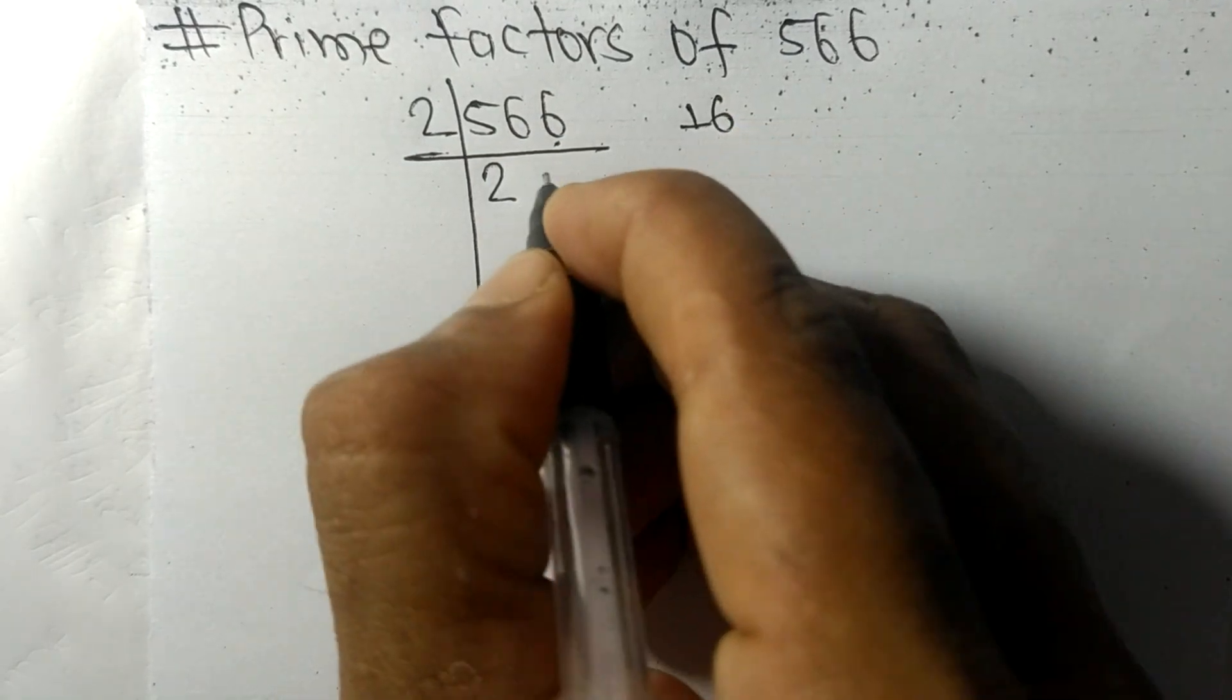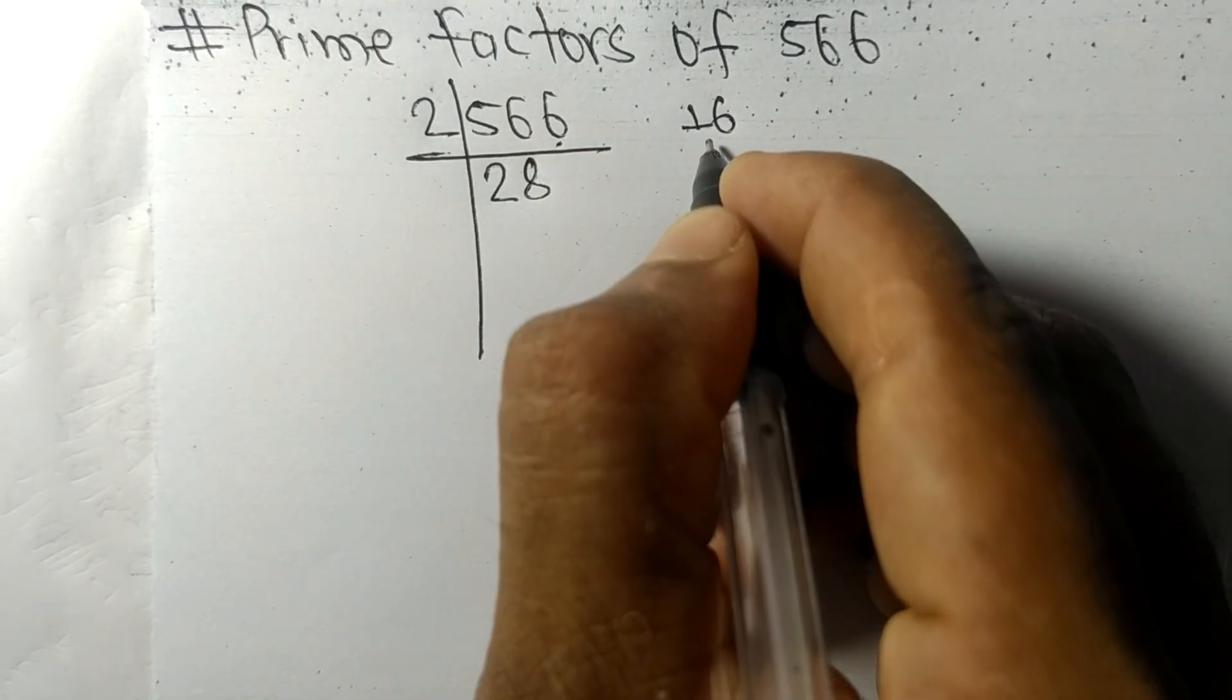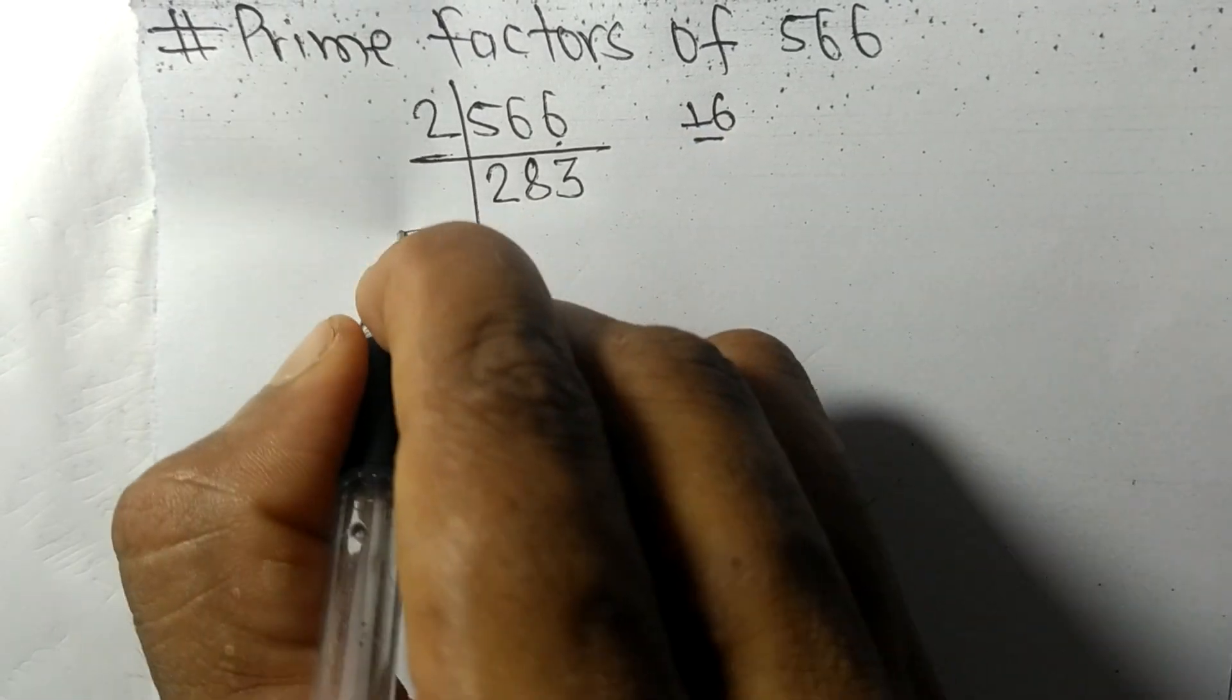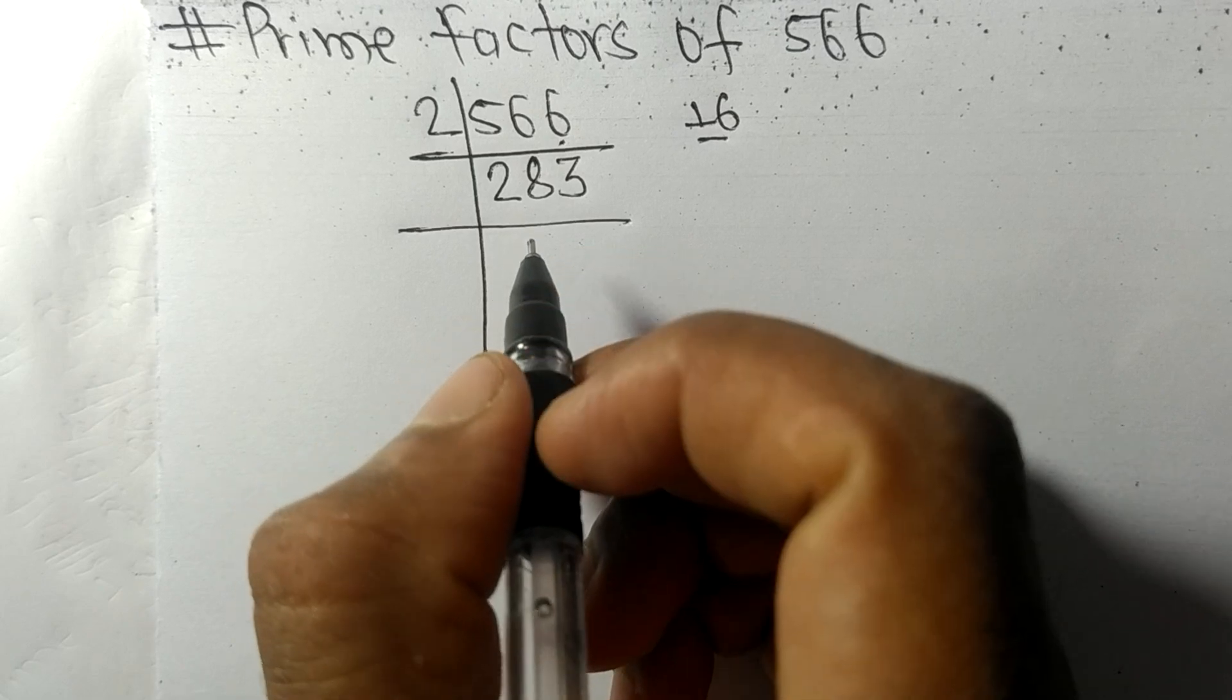And 6, 16, 2 times 8 is 16, and 2 times 3 is 6. So now we got here 283.